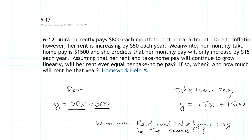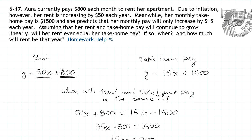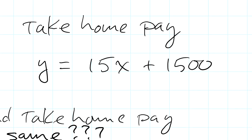Meanwhile her monthly take-home pay is $1,500 and she predicts that her monthly pay will only increase by $15 each year. You can see right here this is her current take-home pay $1,500 and every single year she's predicting that's only going to increase by $15 per year.